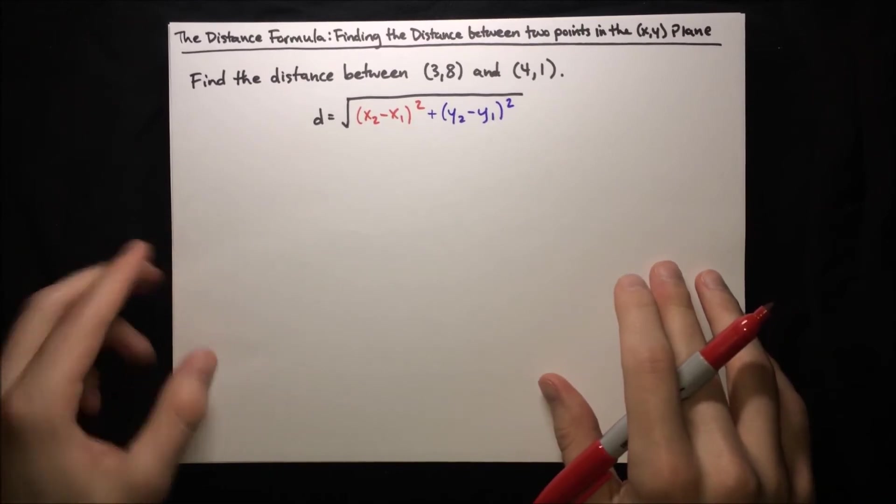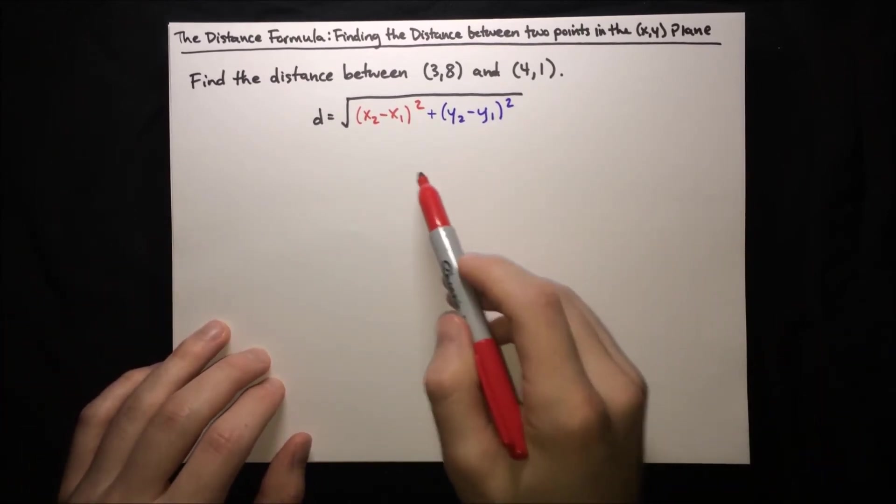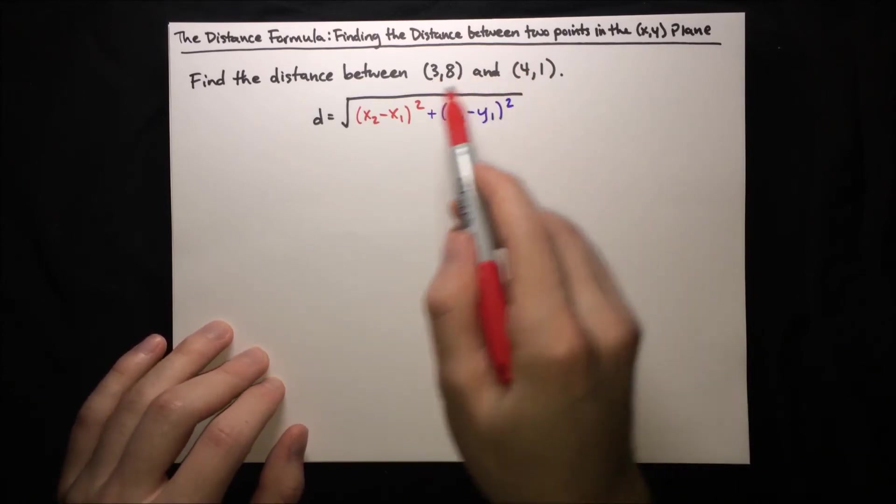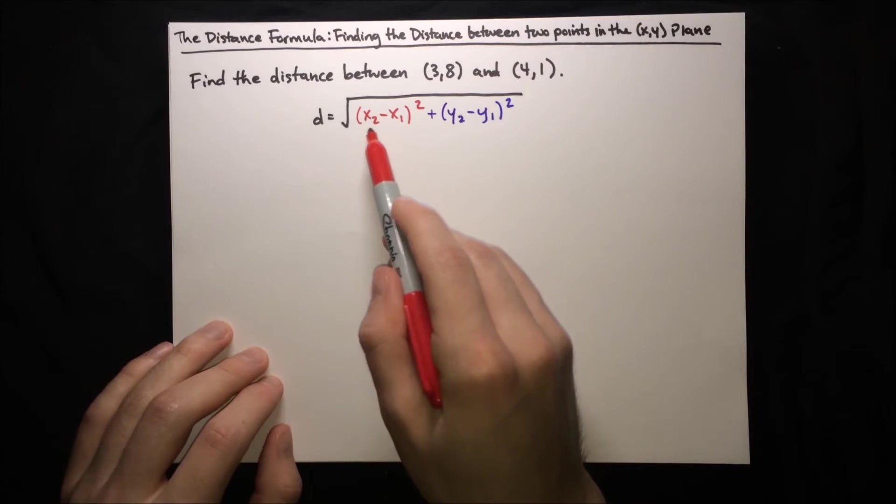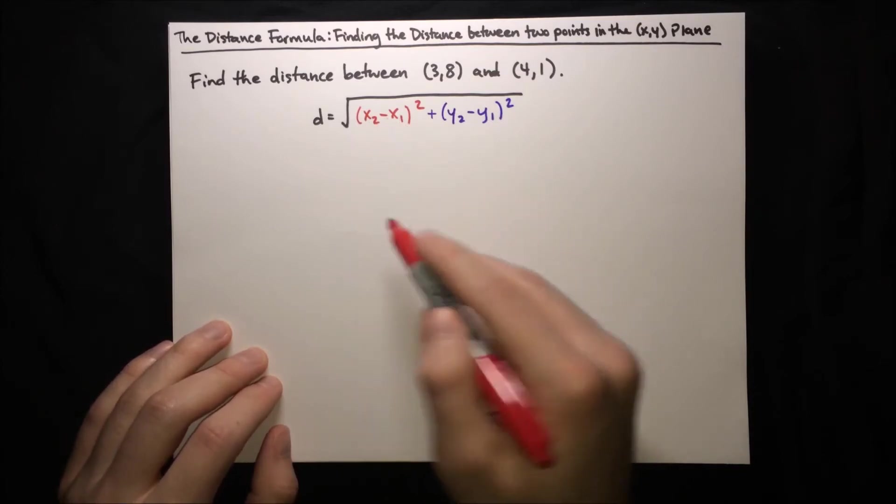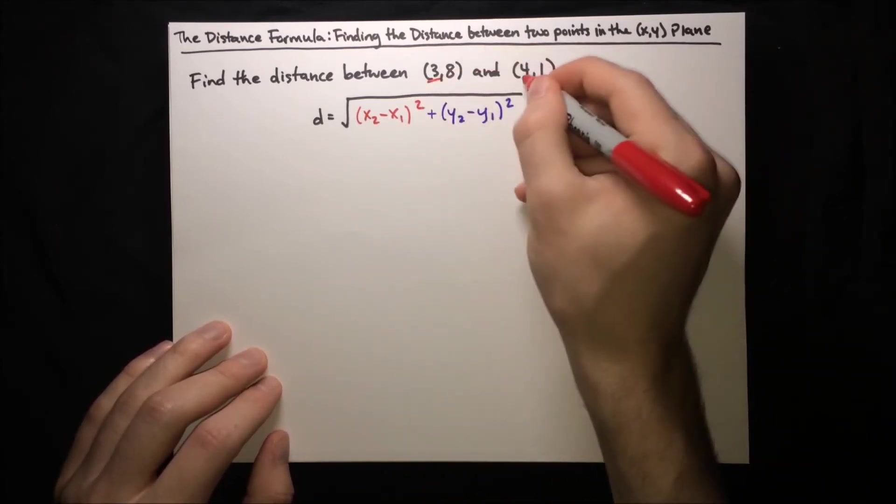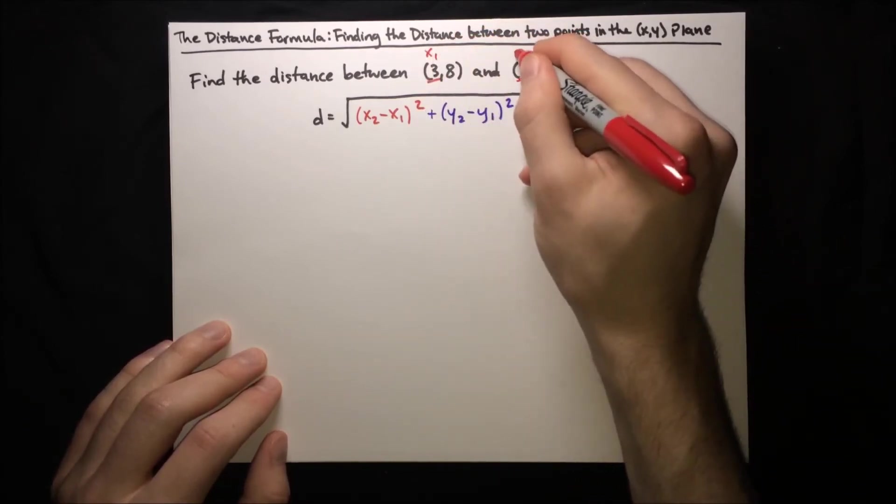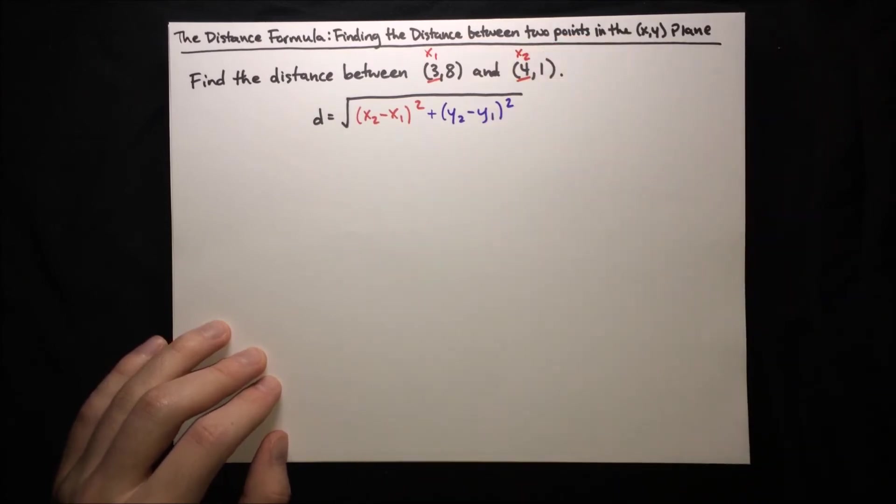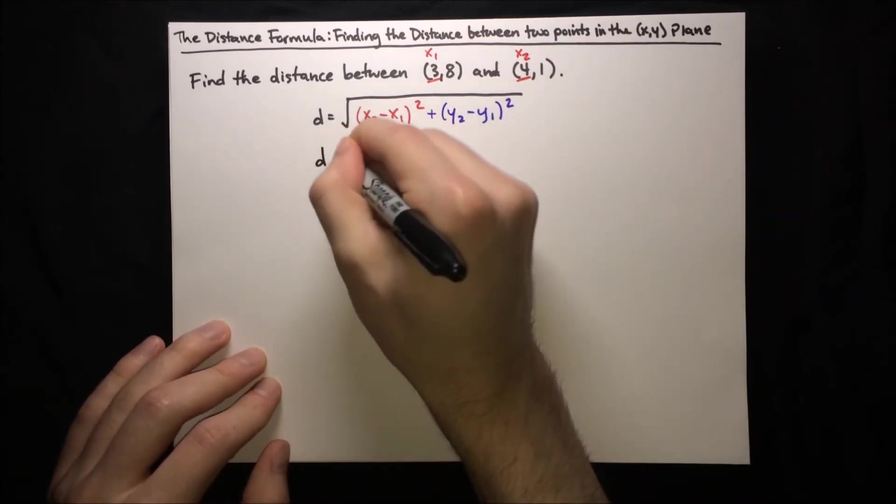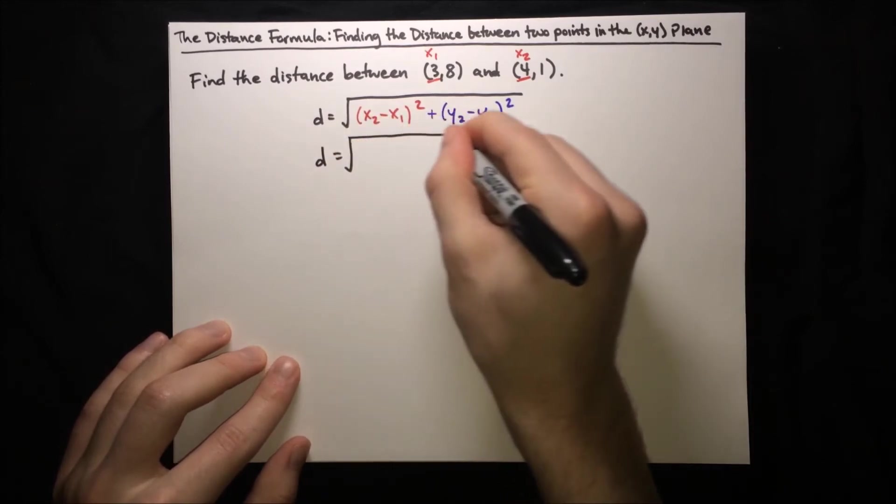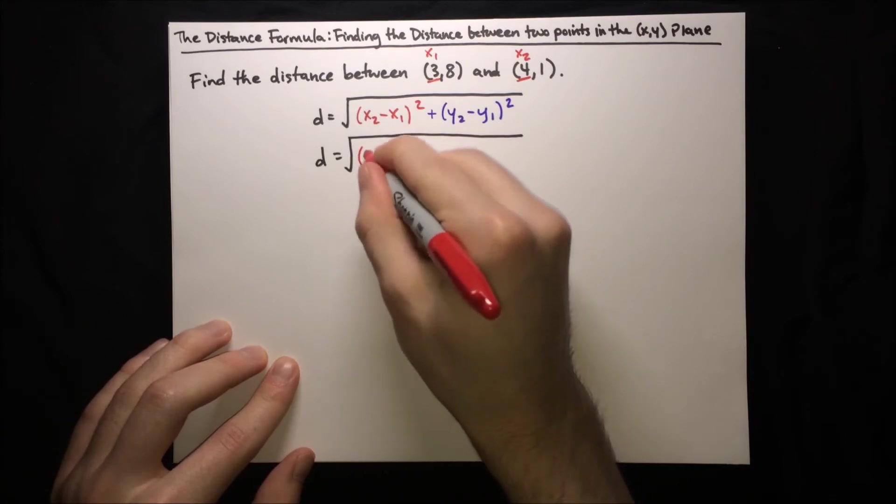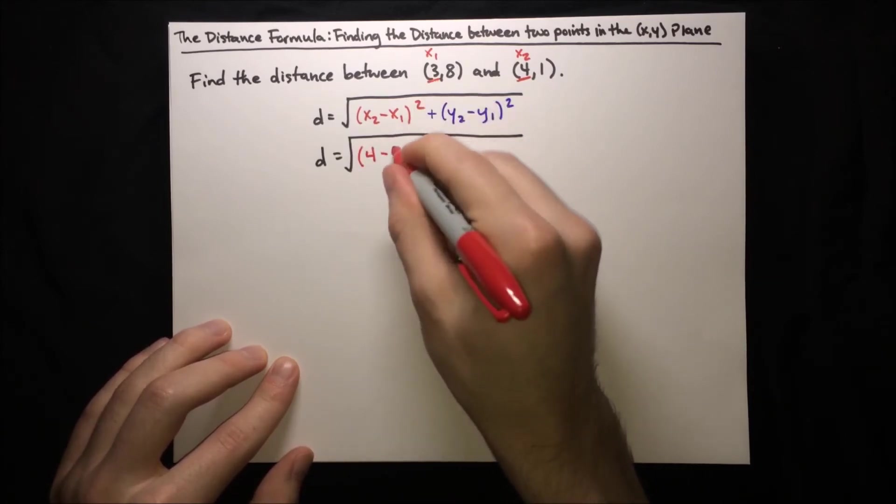For our first example, we're going to use the distance formula to compute the distance between (3,8) and (4,1). So we're just going to plug in these points into their corresponding spots in the distance formula. So first we're going to look at the x coordinates, 3 and 4. We'll let 3 be x₁, and we'll let 4 be x₂. And then plugging this in, we've got that d equals square root of x₂ is 4, so plug that in. And x₁ is 3, so plug that in, squared.